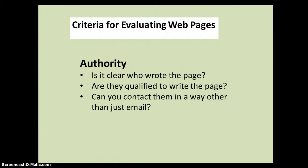Let's start with authority. This is probably the most important thing you could look at with a website when you're doing research. It's crucial that you are able to tell who wrote the page and why they are qualified to write it. Are they an expert in their field? Any site up there for educational or scholarly reasons should have an author's name, or if not an individual, an organization — for example, a university. You might look to see if you can contact them beyond just email; any professional putting out information on the web is going to list a street address and possibly a phone number.